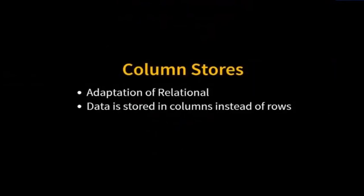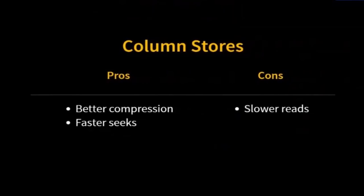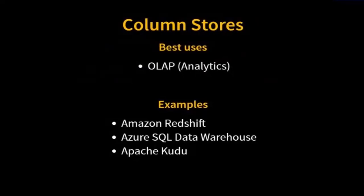Next, column stores. This is an adaptation of a relational model where data is stored in columns instead of rows. On the left we have a traditional relational database with data stored in rows; on the right we have column stores. If we imagine countries or states, we have a very limited set, so we can compress this data really quickly, which means we can load a lot of data really fast. Column stores are great for analytical workloads where we can bulk read content and bulk seek, as opposed to transactional workloads which would be best for a different data store. Column stores are not great at transactional processing — they're great for analytical workloads where you want to process data in bulk.